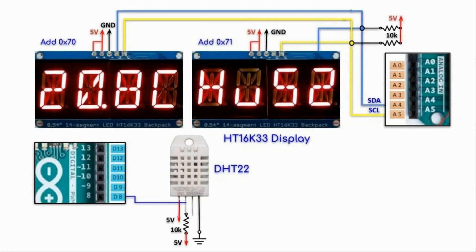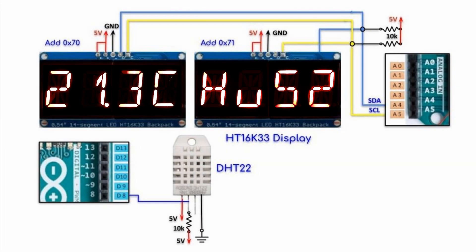A circuit diagram of the implemented system is shown here. We have two HT16K33 displays interfaced with Arduino via the I2C connection, and a DHT22 sensor connected to the Arduino through digital pin D8. The first display shows temperature in Celsius, and the second display shows humidity as a percentage.